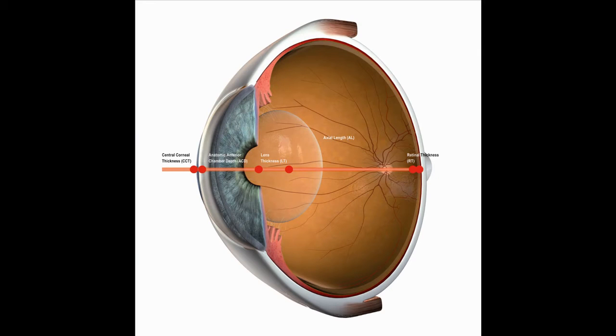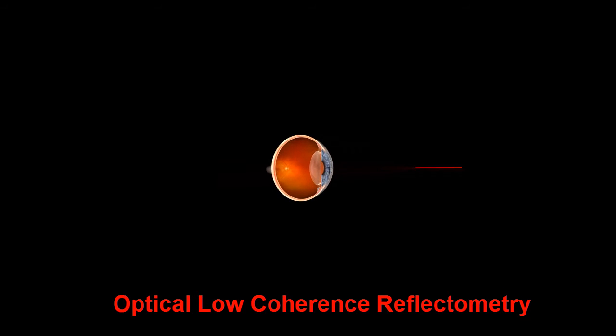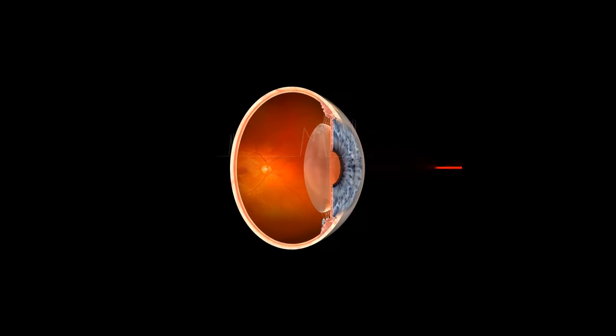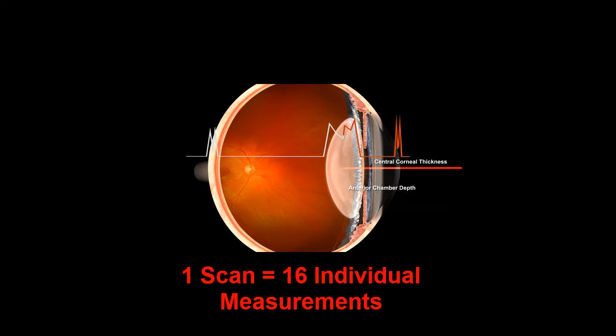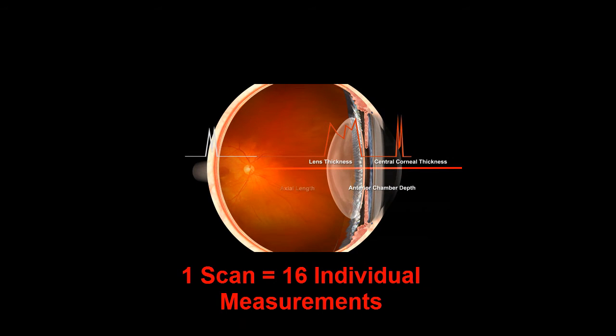Lens thickness measurements are captured along the patient's visual axis, producing highly accurate and reproducible measurements. LensStar utilizes optical low-coherence reflectometry to measure lens thickness, a technology similar to time domain OCT. Each scan is composed of 16 individual measurements.